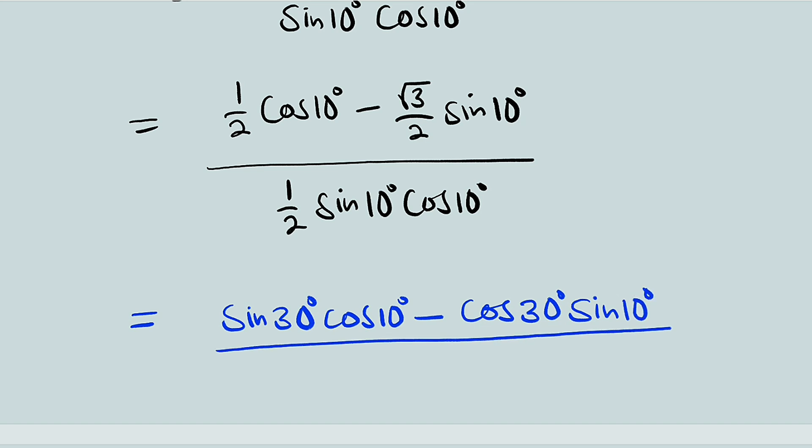So we have 1 over 2 divided by 1 over 2, but I want us to multiply by 1 over 2 multiplied by 2. Remember 1 over 2 times 2 is 1, so it's like we are multiplying by 1. We are doing so for a purpose. You will see that shortly. We have 1 over 2 times 2, then multiply by sine of 10 degrees multiplied by cosine of 10 degrees.